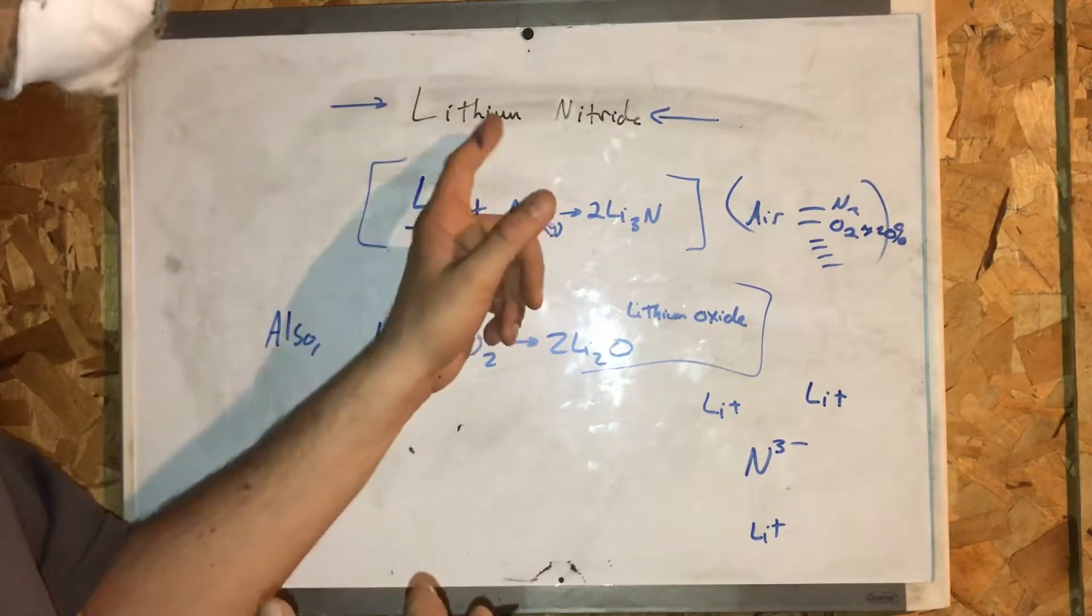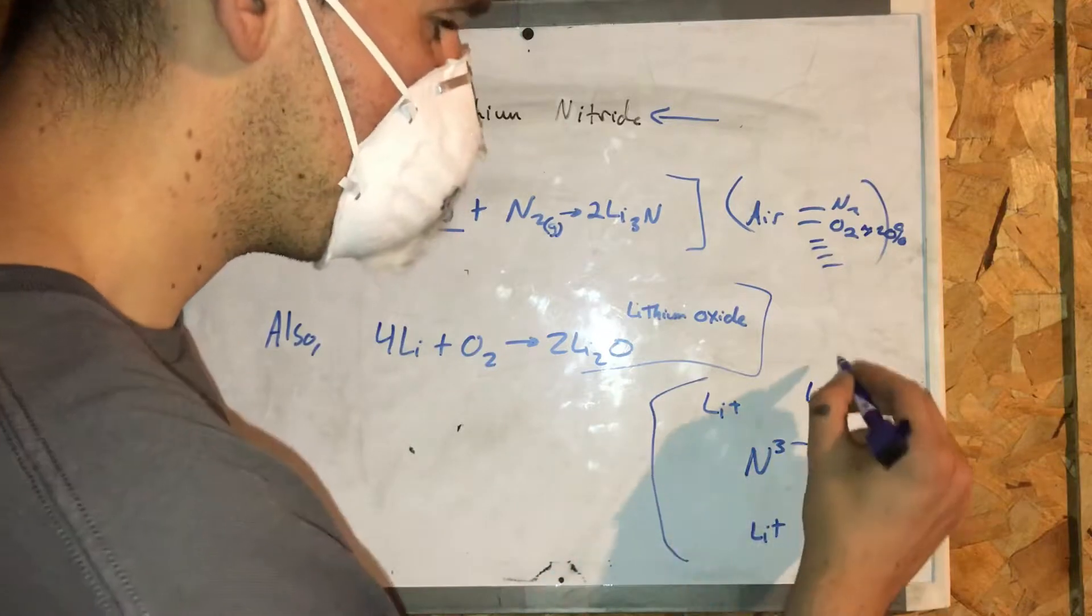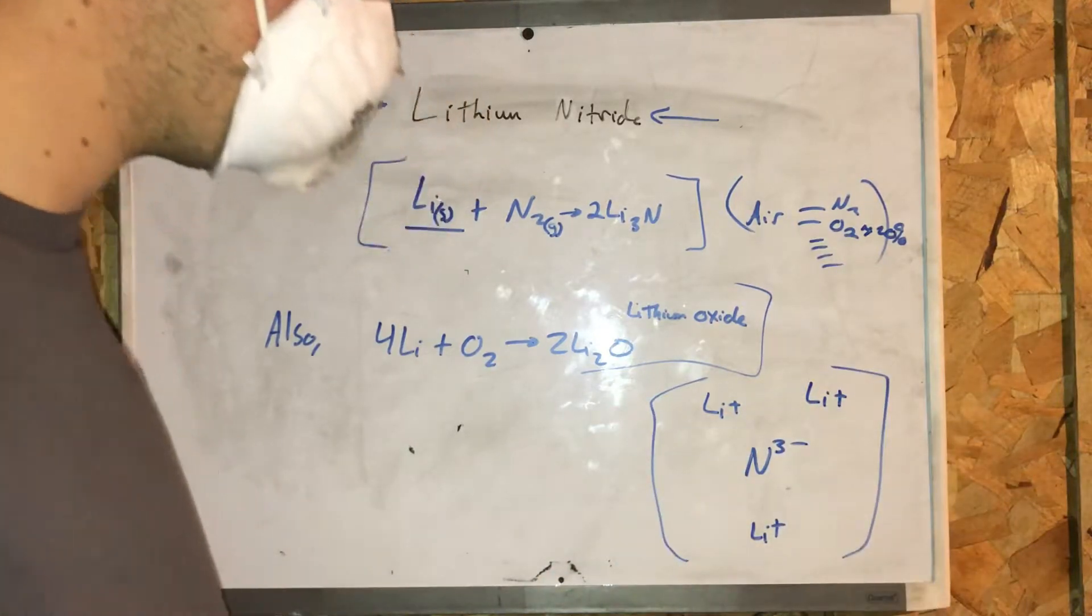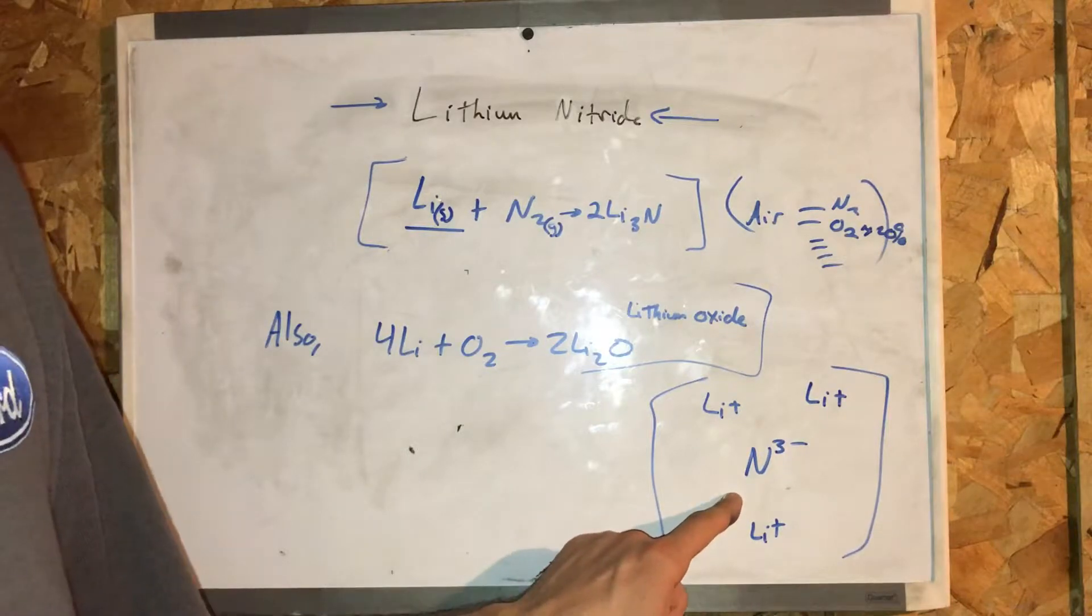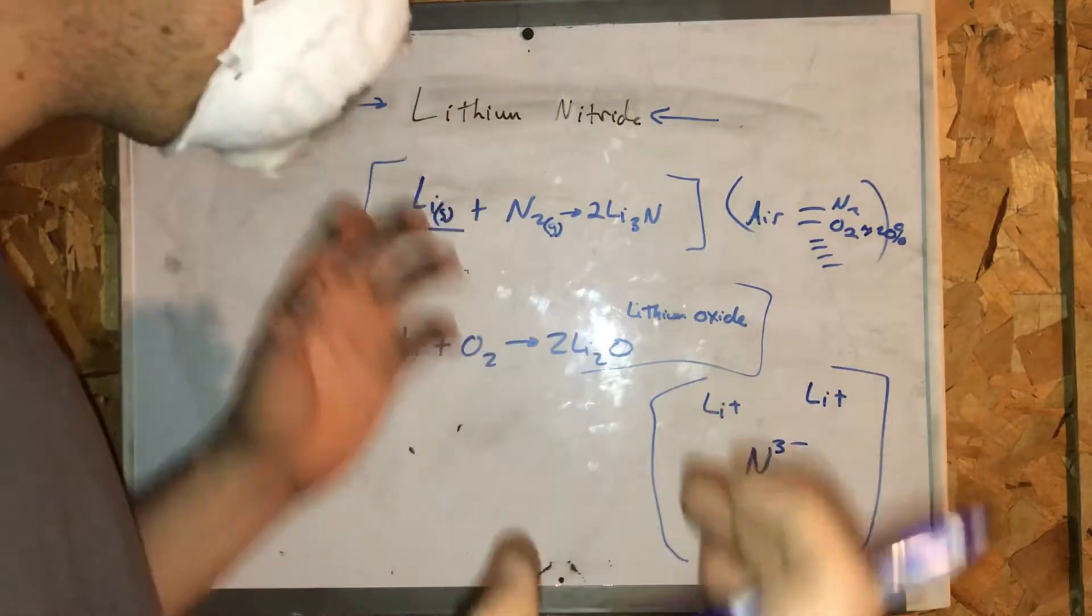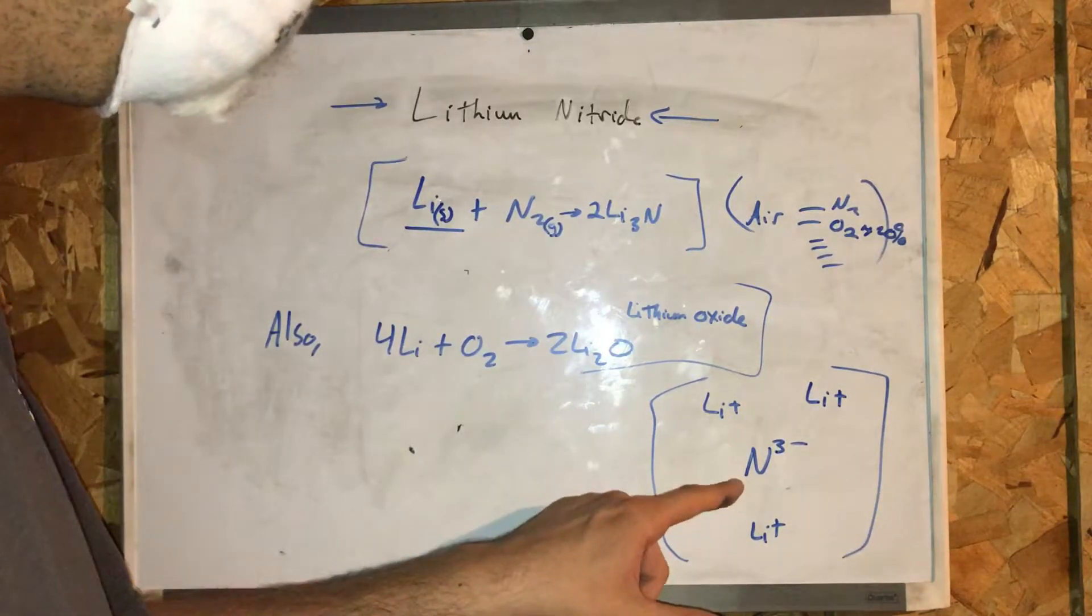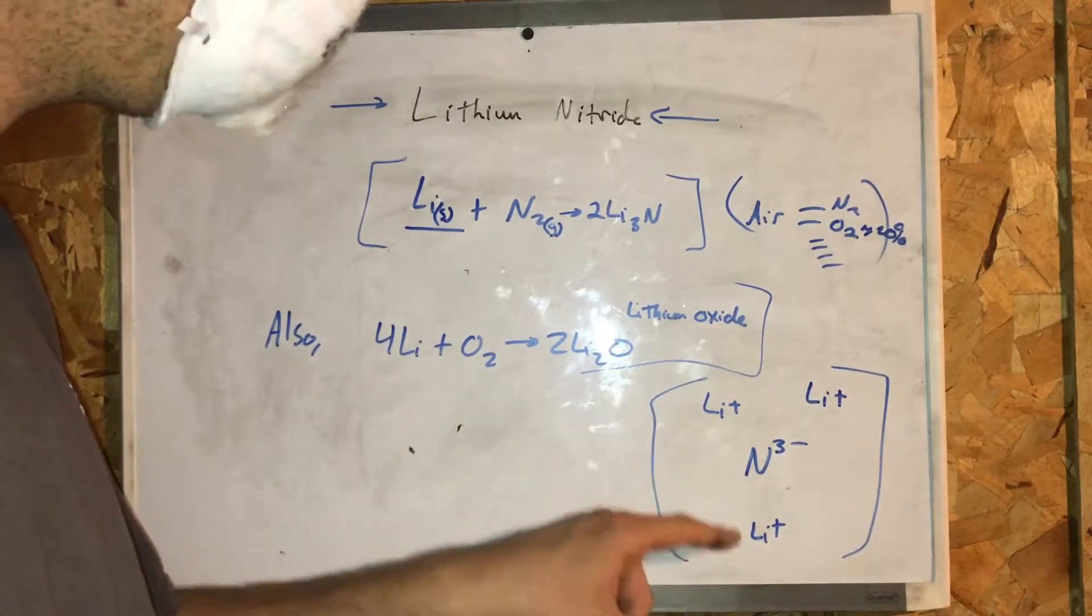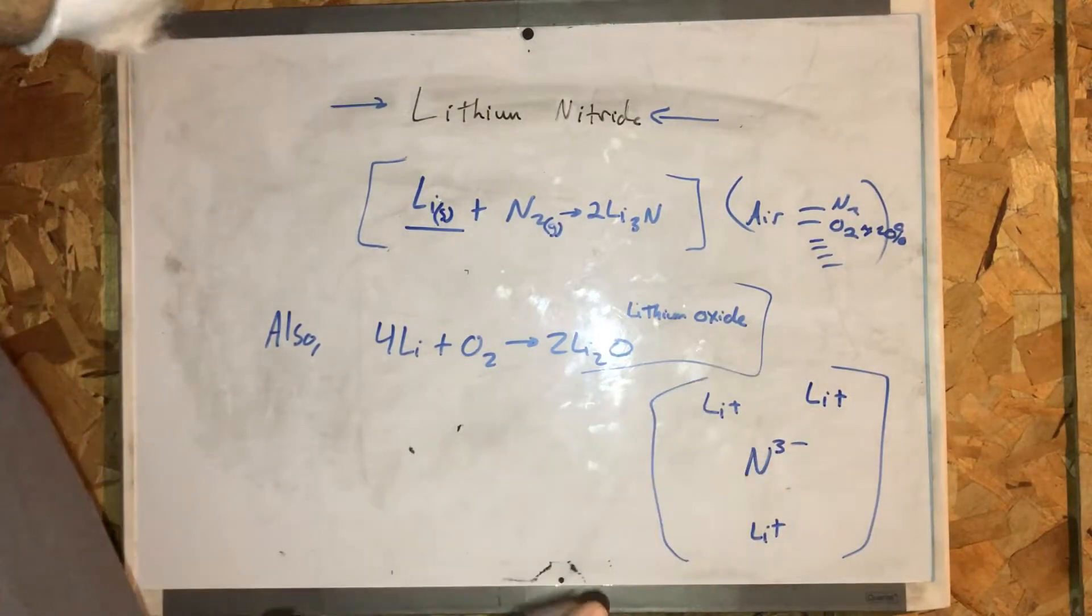Now, what's interesting about lithium nitride as a molecule, it appears to look like this. So the nitrogen in this case is always trying to capture the electrons. So nitrogen is in the center, and there's three lithium atoms scattered like so.